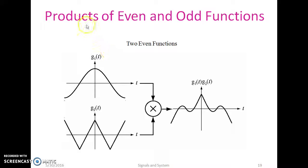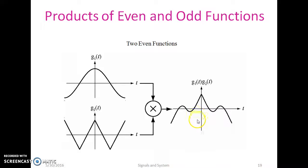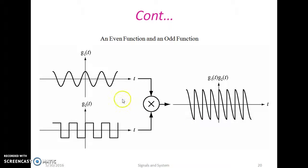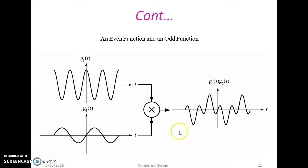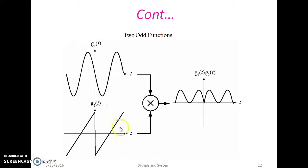Products of even and odd functions: if two even functions are multiplied the product is even; if one function is even and the other is odd the product is odd; if two odd functions are multiplied the product is even.